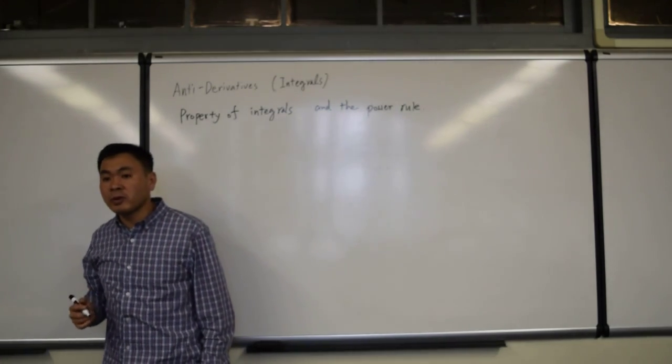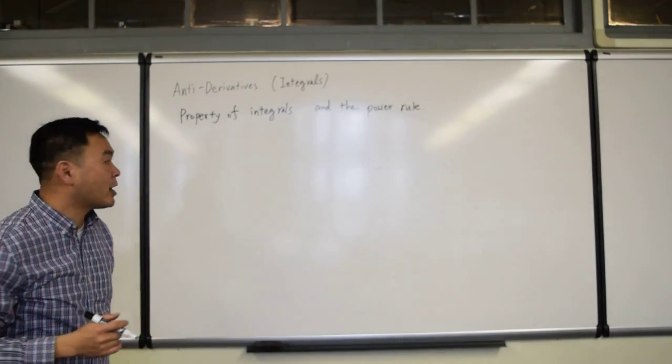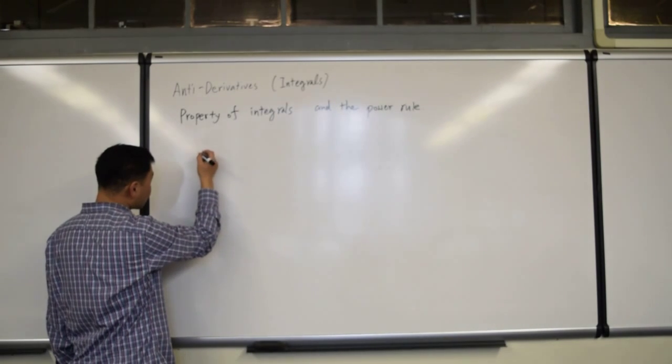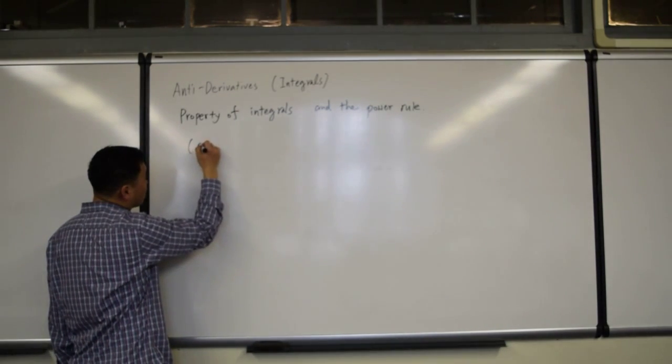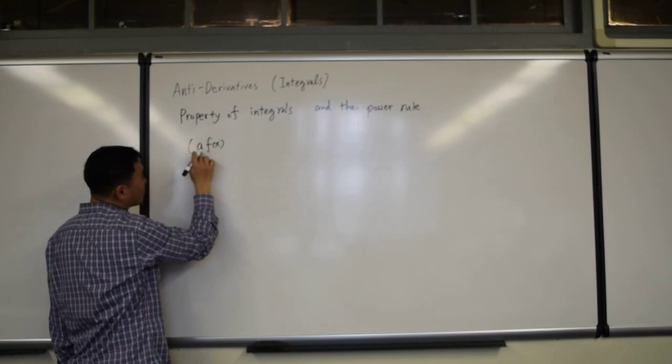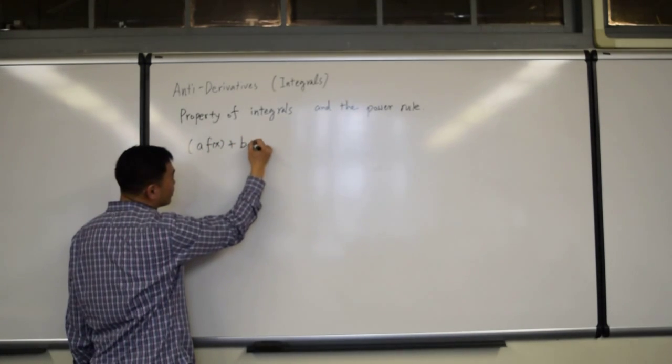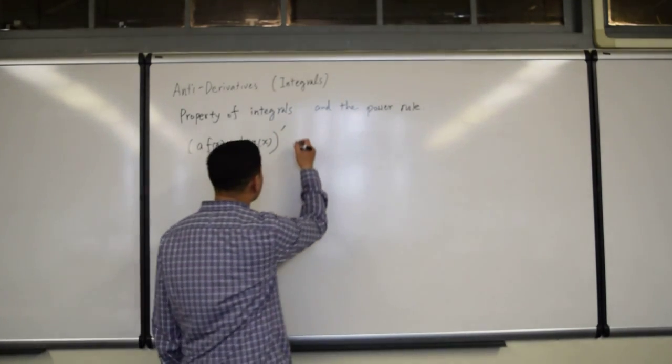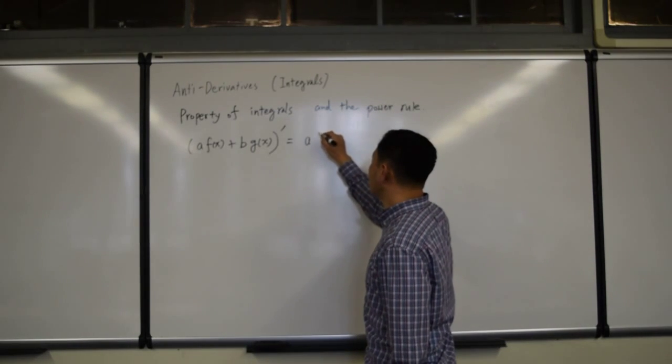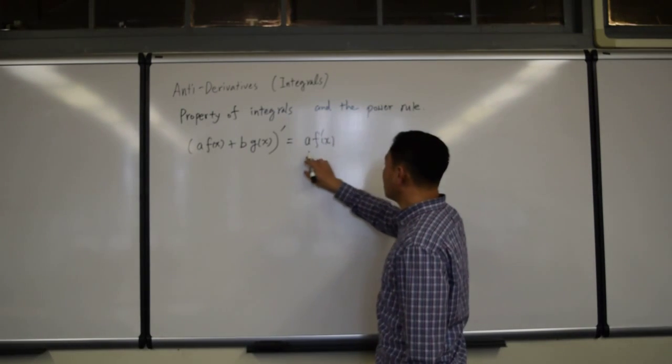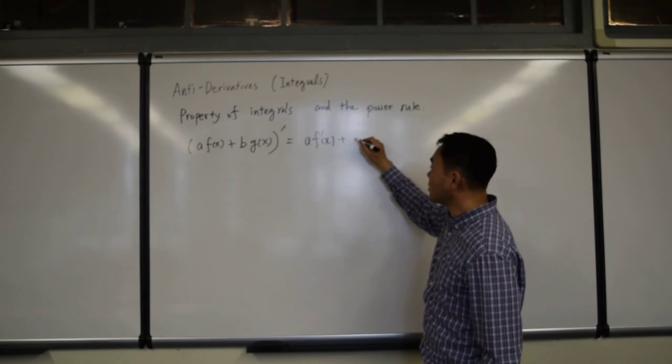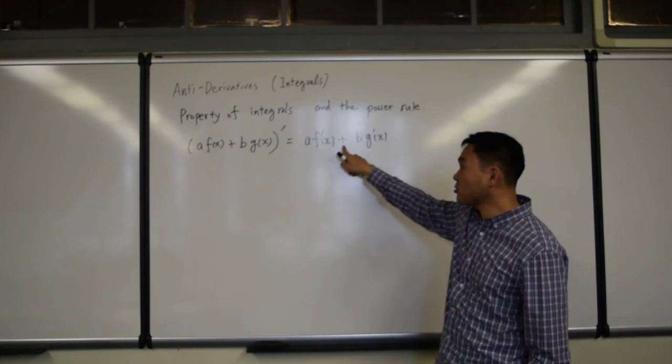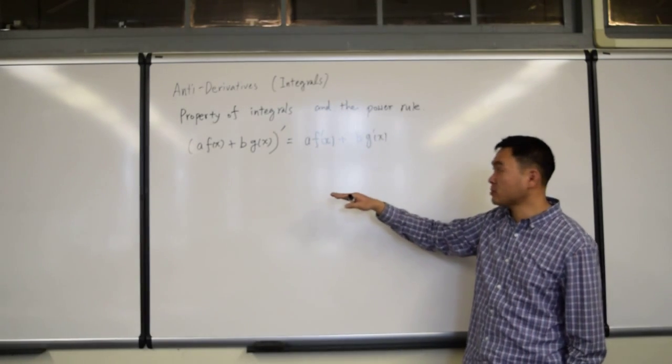When we first went over derivatives, we talked about the linearity of a derivative. If you have a function with some constant multiplied and another function multiplied, and if you differentiate, you get to split the addition or subtraction, and any constant multiple can be pulled out.